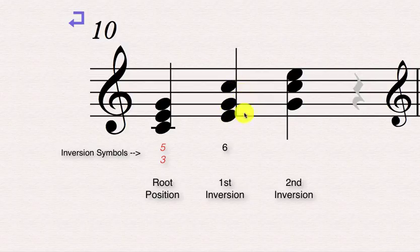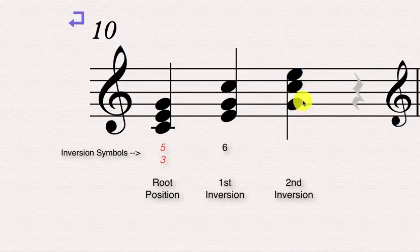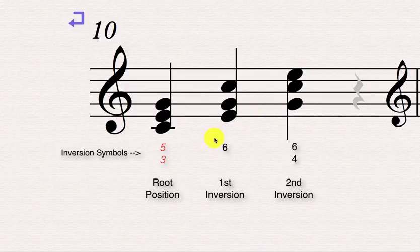Now we go over to our second inversion triad, and you'll see a similar thing. If you go up a sixth from the sounding bass note, which is the fifth of the triad, you get a 6. But there's no 3 here — instead it's an interval of a fourth from the G to the C. So the inversion symbol for a second inversion triad is 6, 4. You need the 4 there to differentiate it from the first inversion triad, which is just the number 6.